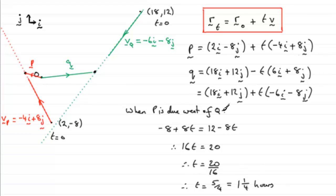That's when P is due west of Q. From the diagram — I know it's not drawn exactly accurately — but in one hour P would have travelled to that point, and then a quarter of an hour extra covers a quarter of that distance, adding on to the end. The same applies for Q: after one hour it's here, and after a further quarter of an hour it travels a quarter of that distance in that direction. So hopefully that gives you some idea over this part of the question.